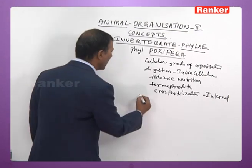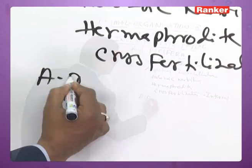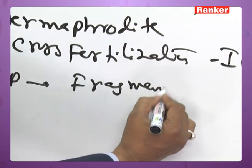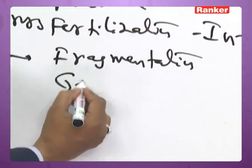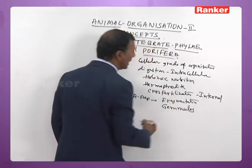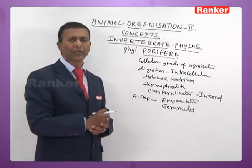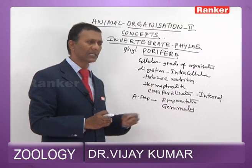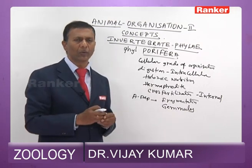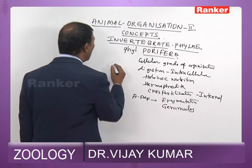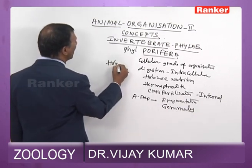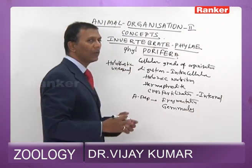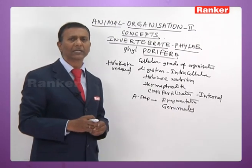Apart from sexual reproduction, Porifera also reproduce by asexual methods — by fragmentation and by internal buds called gemmules. Certain freshwater sponges and a few marine sponges reproduce by internal buds called gemmules. The mode of cleavage is holoblastic unequal, and the life cycle involves larvae.